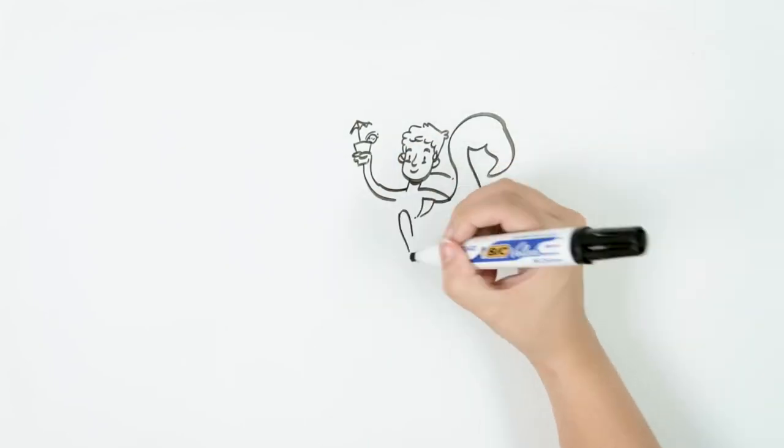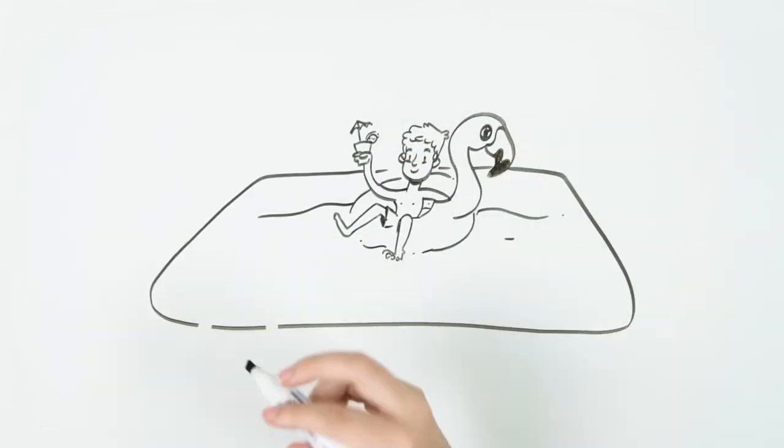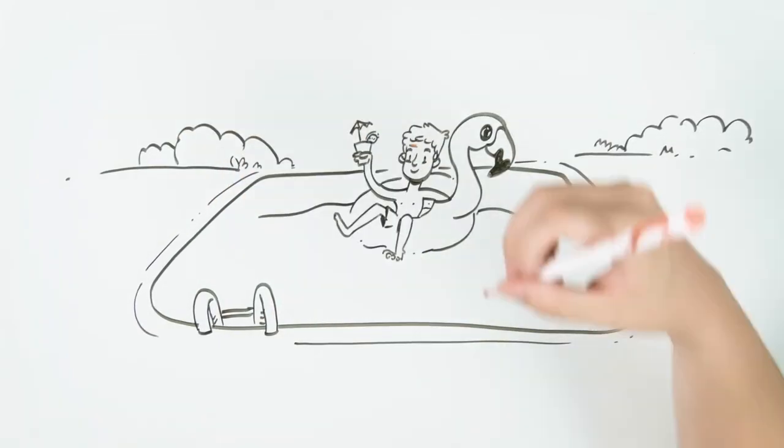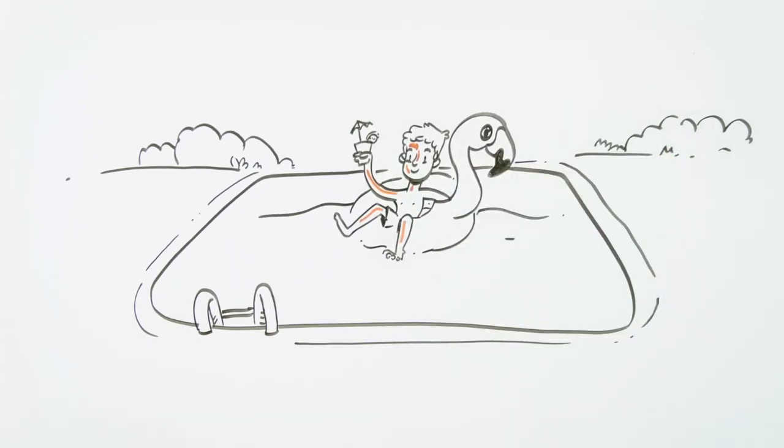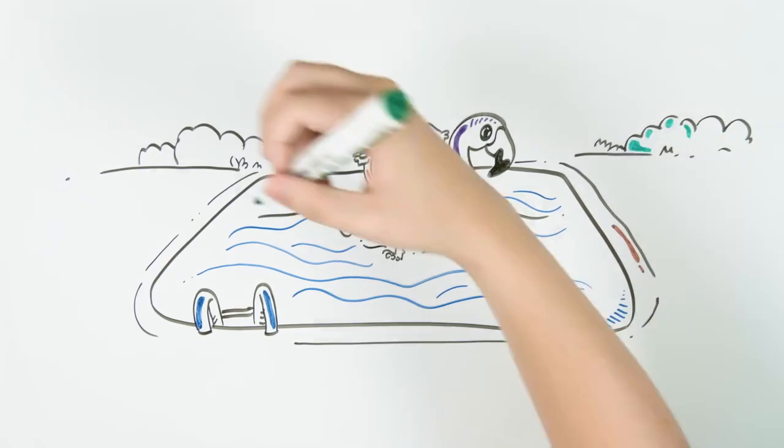Imagine having a cool lemonade, lying on a flamingo-shaped float, in the middle of a pool of crystal clear water. Looks good, right? Now subscribe and give us a like right now, because the image is about to change a lot.